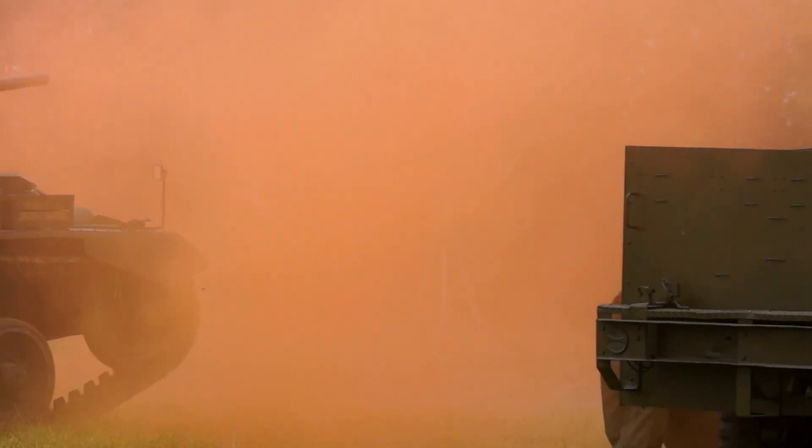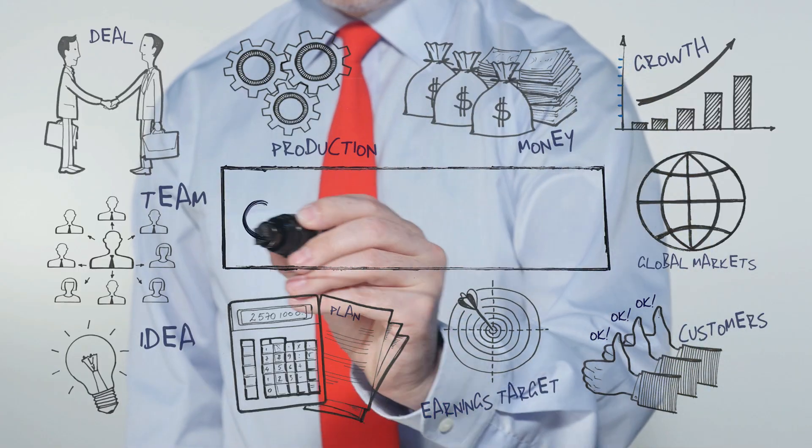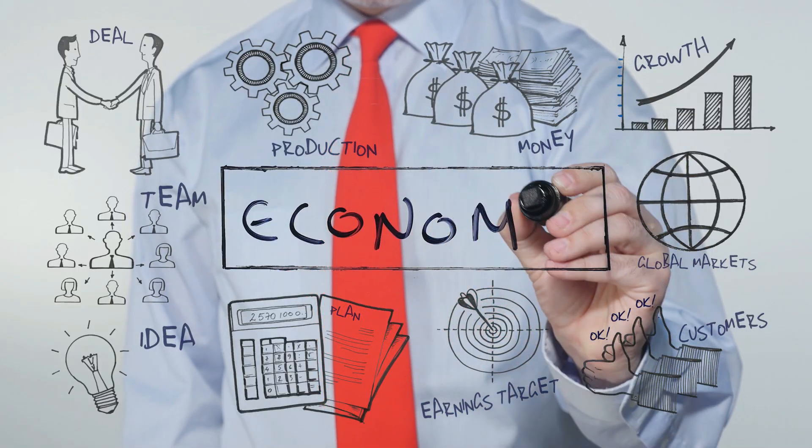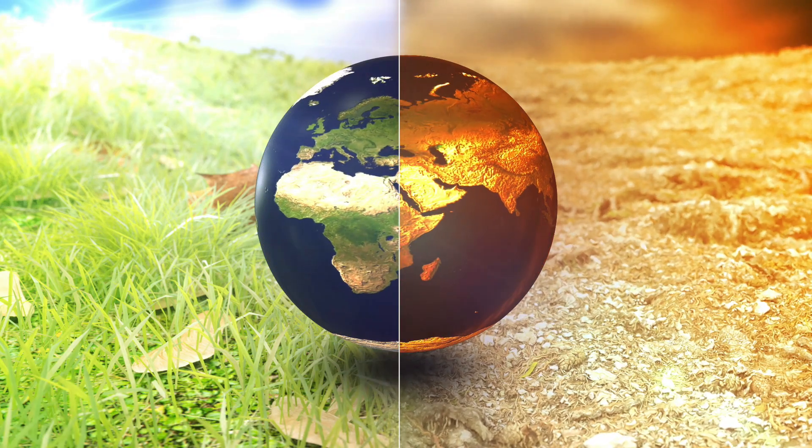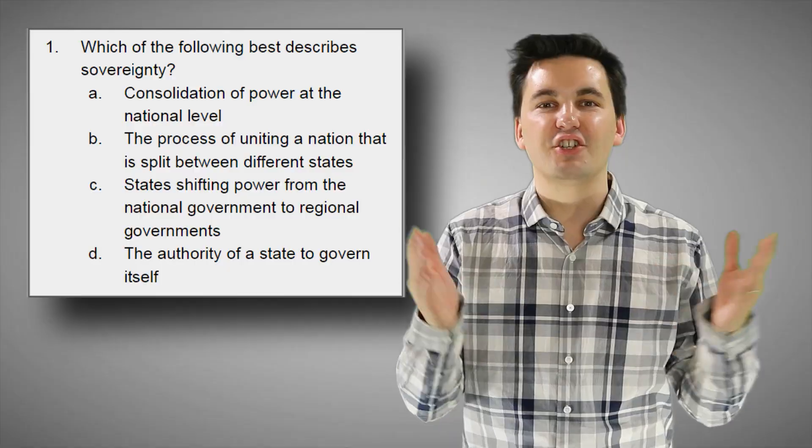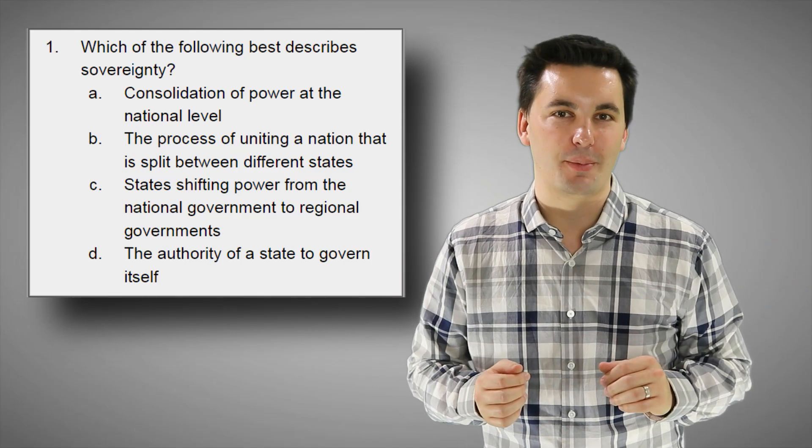Military alliances reduce the possibility of a country attacking you. Economic treaties allow for more goods and services to be sold in your country. And environmental agreements help make the world and your state a cleaner and better place to be. And just like that, geographers, we're done with another topic review video.